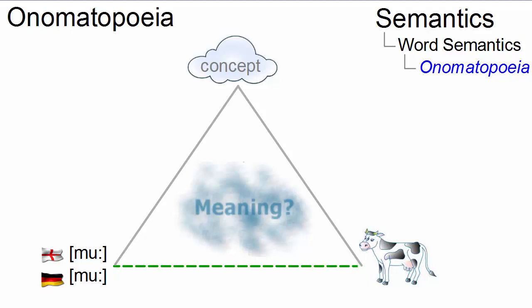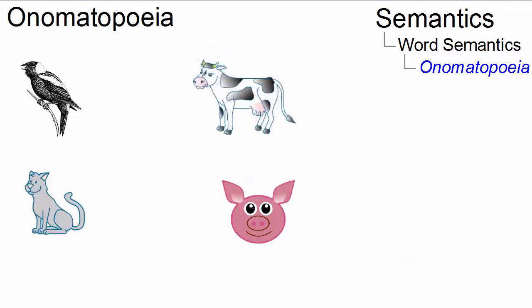Common occurrences of onomatopoeia include animal noises such as 'chirp' for birds, 'meow' for the noise produced by a cat, or 'moo' and 'oink', which stand for cow and pig, respectively.